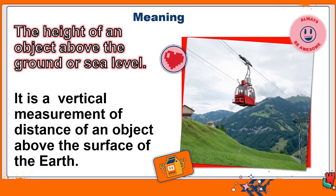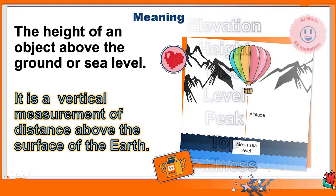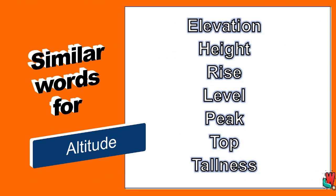Meaning: the height of an object above the ground or sea level. It is a vertical measurement of distance of an object above the surface of the earth.